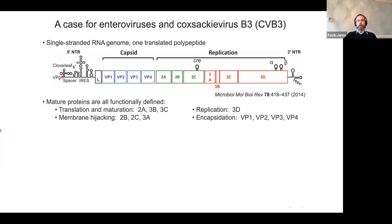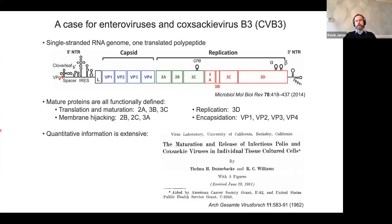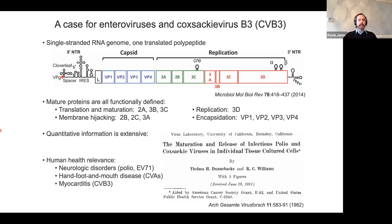Coxsackievirus B3 is a virus in the enterovirus clade, encoded as a single-stranded RNA genome yielding one translated polypeptide. As Einstein said, everything should be made as simple as possible but no simpler — and enteroviruses are really as simple as they come in the viral world. This one RNA genome to one translated polypeptide means that for each translation event, we get exactly one copy of each of the mature proteins. This is an important stoichiometric constraint when we start talking about modeling the viral life cycle.